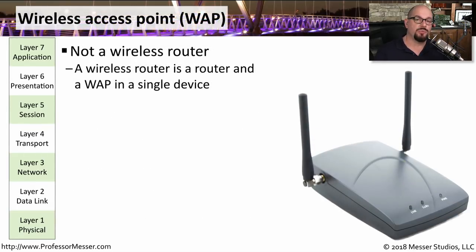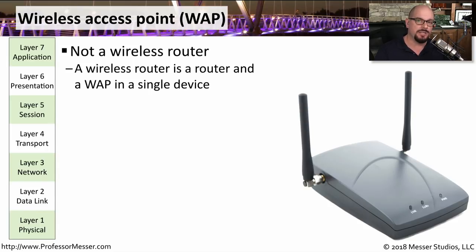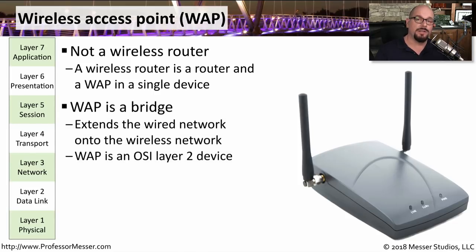In many enterprise networks, we use wireless access points to connect people to a wireless network. This is different from the wireless router you might have in a home office, which combines a router, switch, wireless access point, firewall, and other components. If you were to pull out just the wireless piece, you would have a wireless access point. A wireless access point is a Layer 2 device — it's effectively a bridge between a wireless network and an ethernet network. Many organizations deploy multiple wireless access points throughout multiple floors of a building to ensure continuous wireless connectivity.